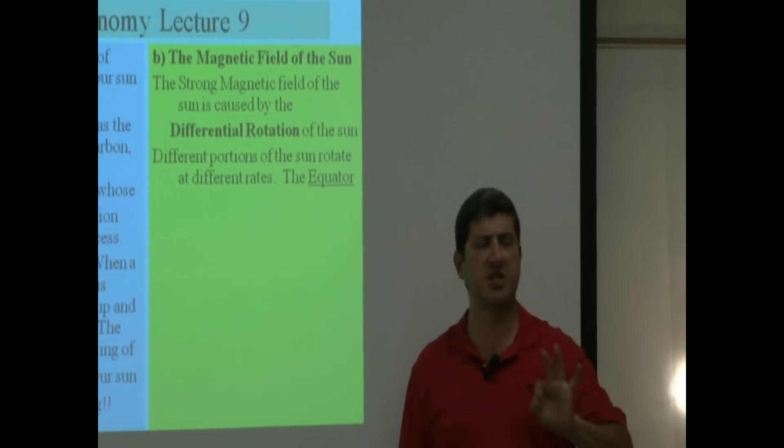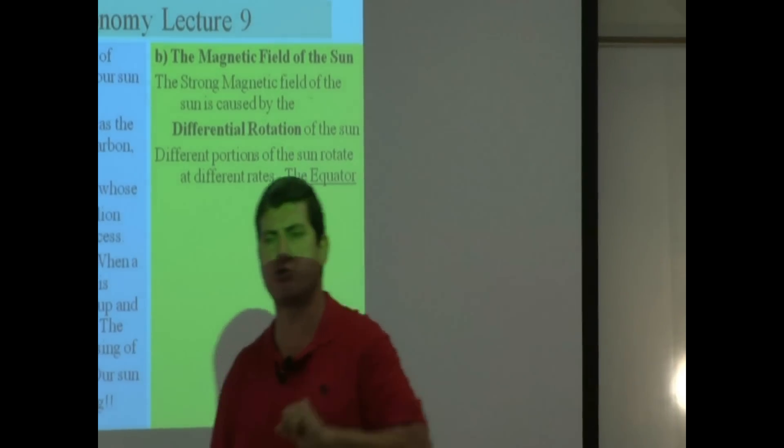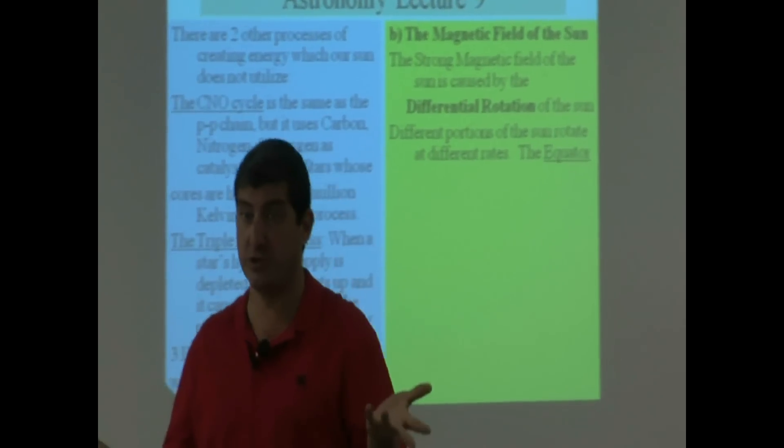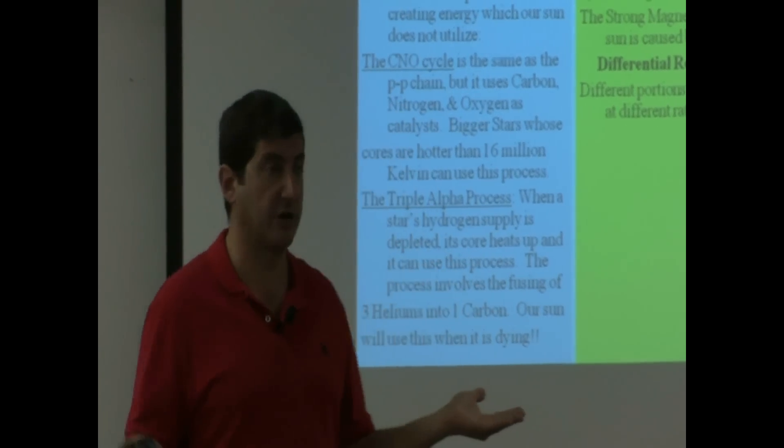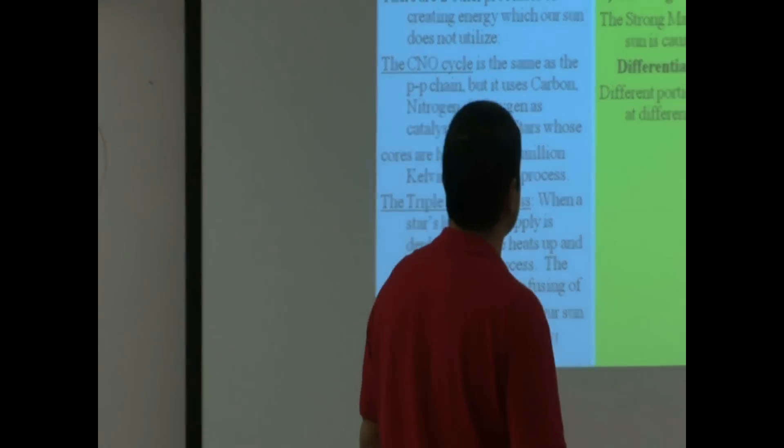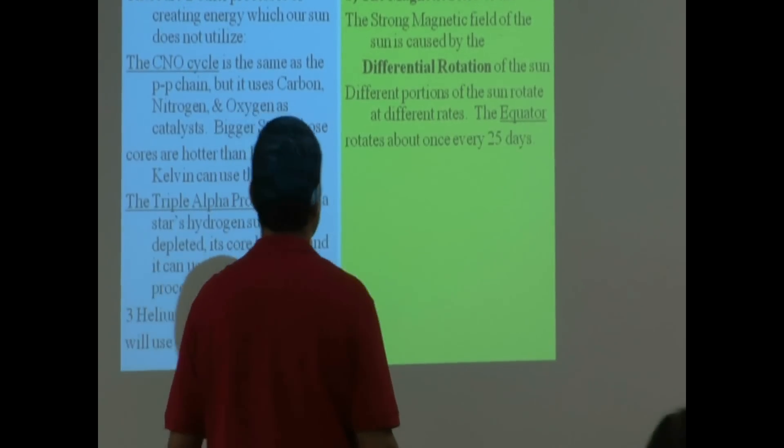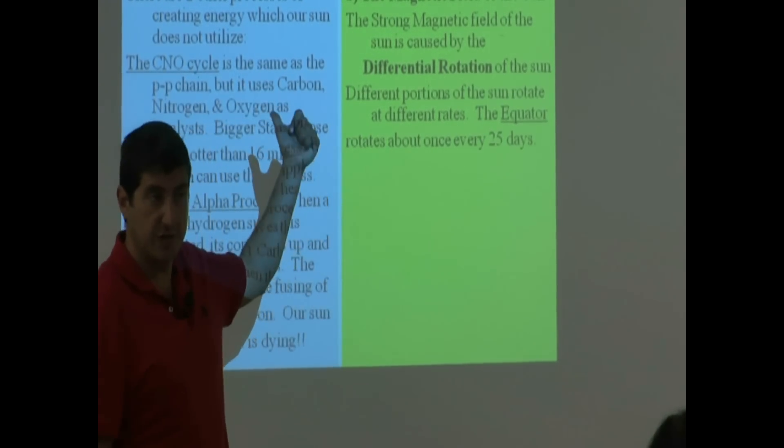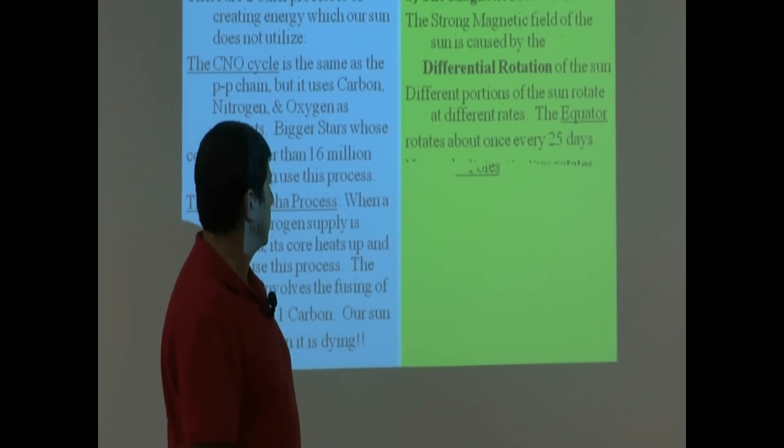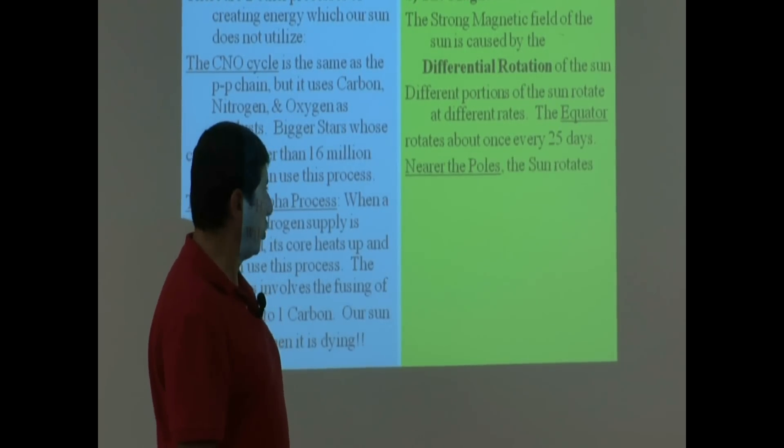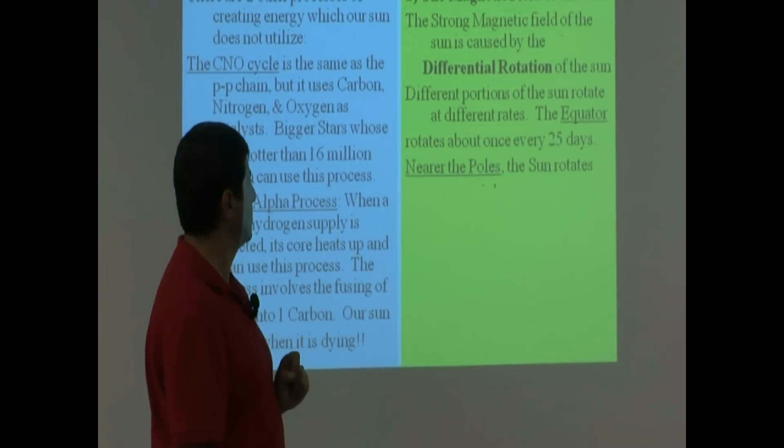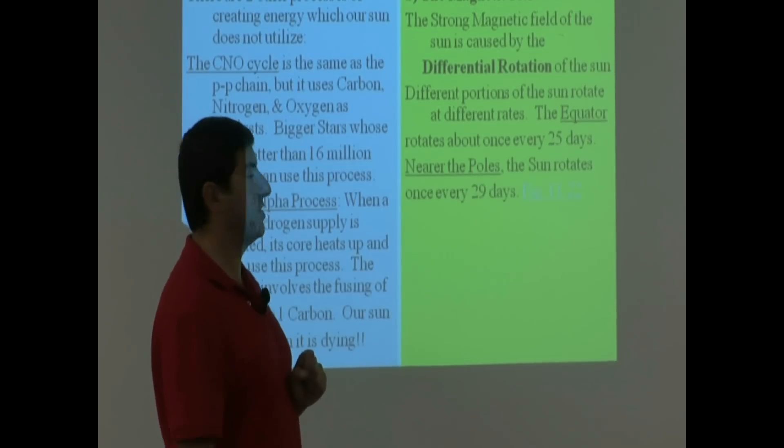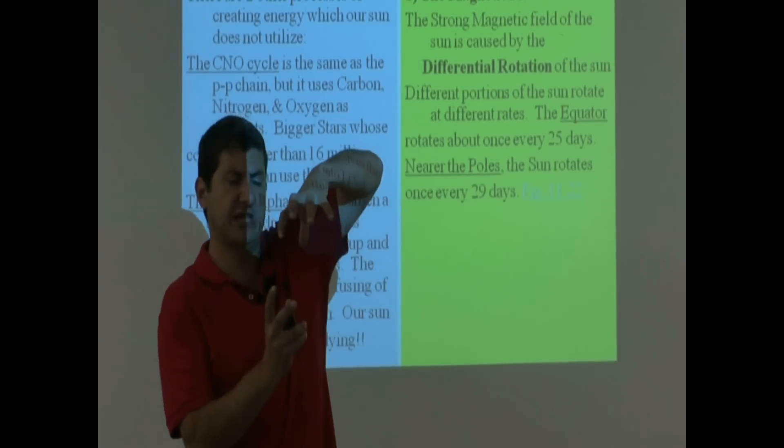So the Sun's magnetic field is even much stronger than Jupiter's, which has the strongest magnetic field out of all the planets. So the equator of the Sun rotates once every 25 days, which we said earlier in the first slide, but nearer the poles, the Sun rotates once every 29 days, so that's very weird.